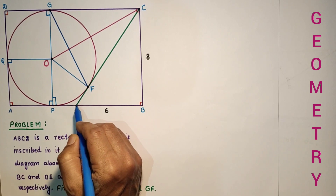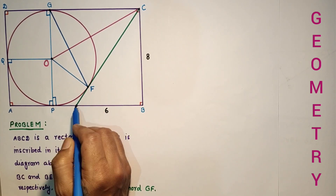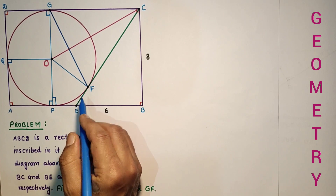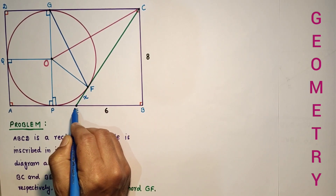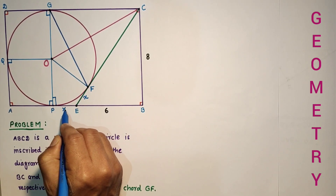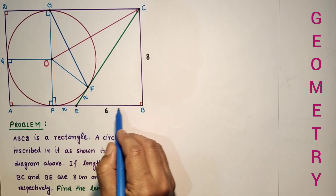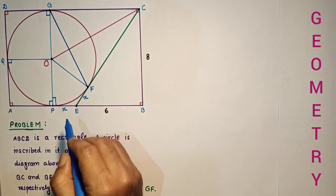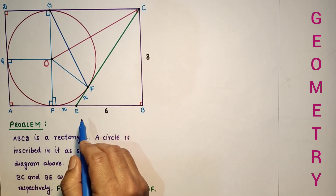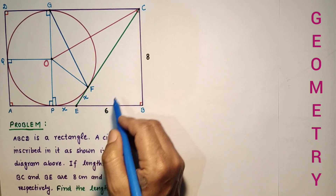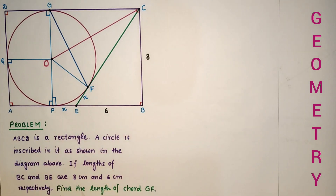From an exterior point to a circle, if two tangents can be drawn, both tangents will be equal. So EF is equal to EP. If we assume EF as X, then EP will also be X. By the Pythagorean theorem, triangle EBC is a right angle triangle.